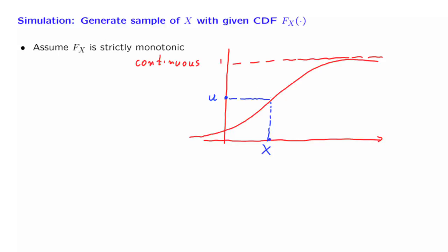So what is it that we're doing? We're going from u's to x's — we're using the inverse function. The CDF takes as input an x, a value on the horizontal axis, and reports a value on the vertical axis. The inverse function goes the opposite way: we start from a value on the vertical axis and it takes us to the horizontal axis. Because of our assumption that the CDF is continuous and strictly monotonic, this inverse function is well defined — given any point on the vertical axis, we can always find one and only one corresponding x.